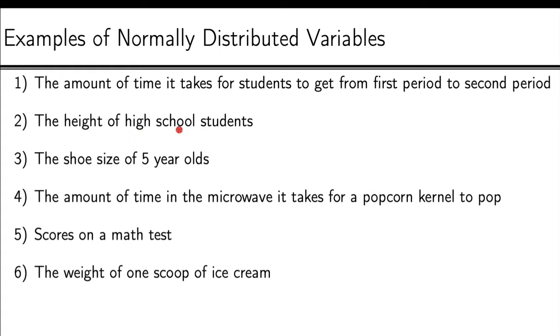Second, the height of high school students. Height is kind of the classic example of a normally distributed variable. Average height, maybe five-six or five-seven, and a lot of people are around that height. But then for really short people, there's much less people. And for really tall people, there's much fewer of them. The shoe size of five-year-olds, the same idea there, right? Most five-year-olds will have around the same size shoe, but some five-year-olds have really small feet and some five-year-olds have really big feet for their age. And so that's where we get the bell shape there, the normal distribution.